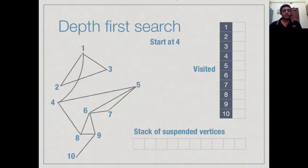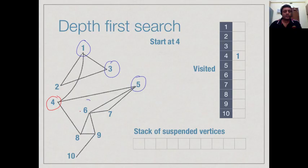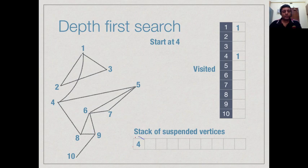Let us execute this algorithm by hand on our graph and see how it works before we write the pseudocode. This time we are starting at 4. The first step is to mark 4 as visited. We identify that it has 4 neighbors: 1, 3, 5 and 6. Taking them in order, we start with 1. Since 1 is not visited, we mark it as visited and put 4 on the stack, suspending the execution of 4 as we go to explore 1 instead.